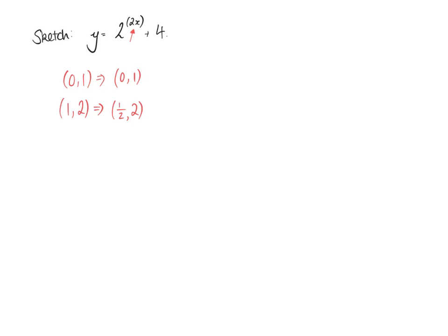Then the plus 4 means our y values go up by 4. So we get (0, 5) and (one-half, 6). Sketch the graph — draw the curve first. We've got our y-axis, marking (0, 5) where it crosses, and the point (one-half, 6). Our asymptote is at y equals 4, because we've moved the asymptote up 4 places with our plus 4.